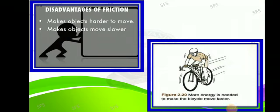The disadvantages of friction: friction makes objects harder to move. If the surface is too rough, you cannot push or pull anything easily — you need to apply more energy. Friction also makes objects move slower.